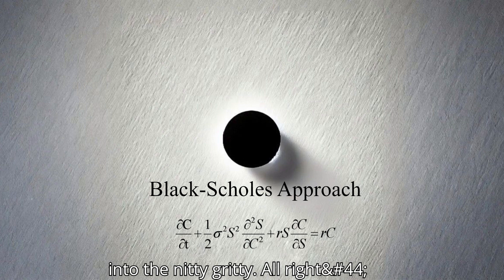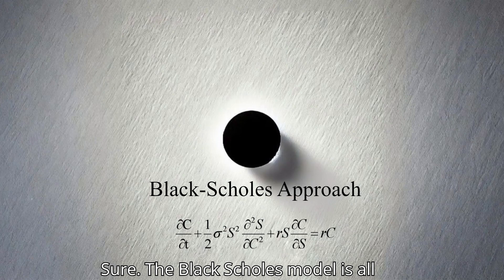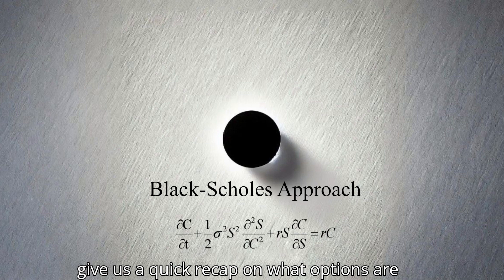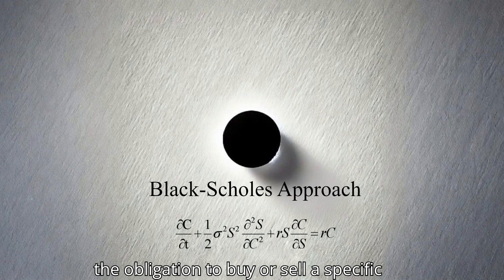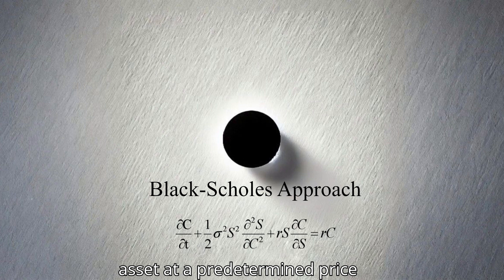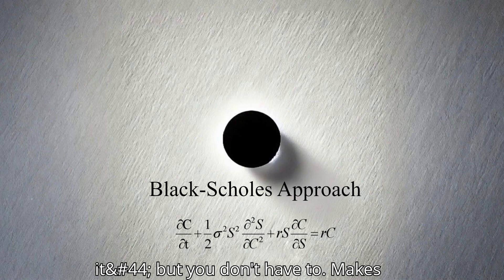Before we get into the nitty-gritty, let's make sure we're on the same page. The Black-Scholes model is all about options pricing. Can you give us a quick recap on what options are and why pricing them accurately is such a big deal?